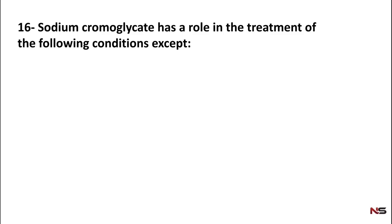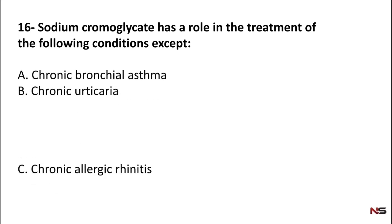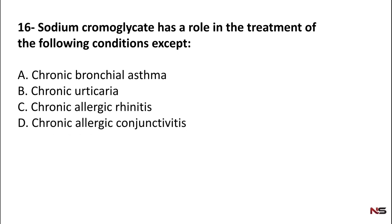Question 16: Sodium cromoglycate has a role in the treatment of the following conditions except — chronic bronchial asthma, chronic urticaria, chronic allergic rhinitis, chronic allergic conjunctivitis. The correct answer is chronic urticaria — option B. Sodium cromoglycate can be used for chronic bronchial asthma, chronic allergic rhinitis, and chronic allergic conjunctivitis.